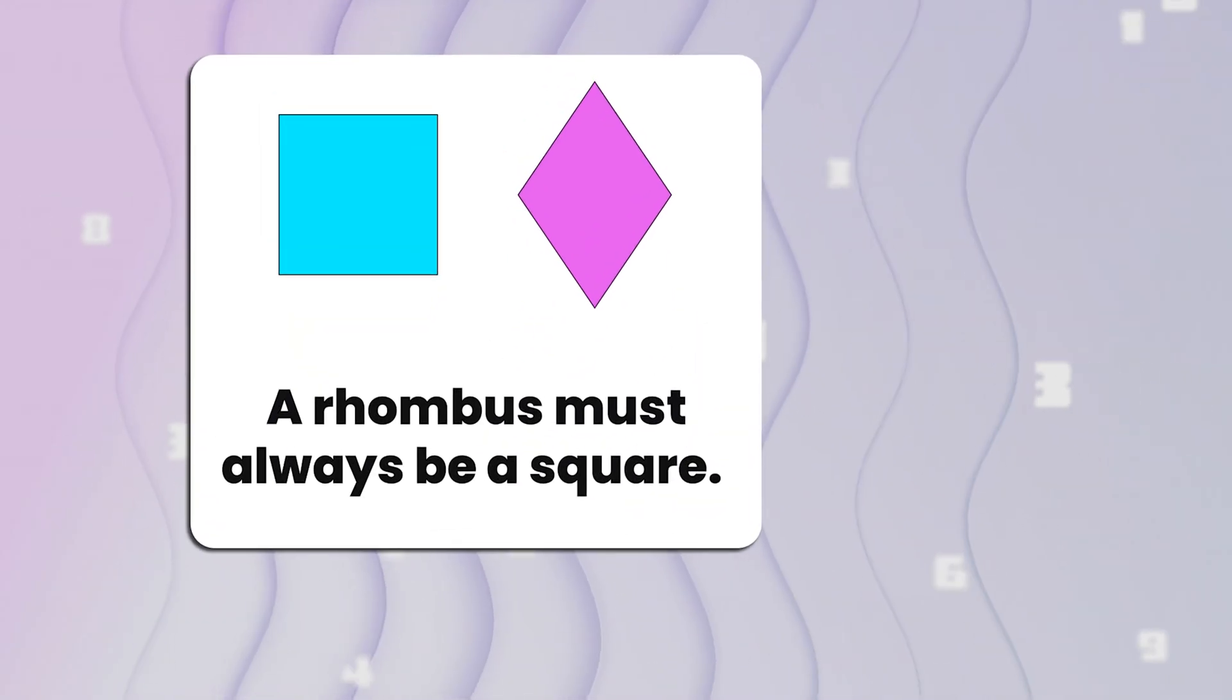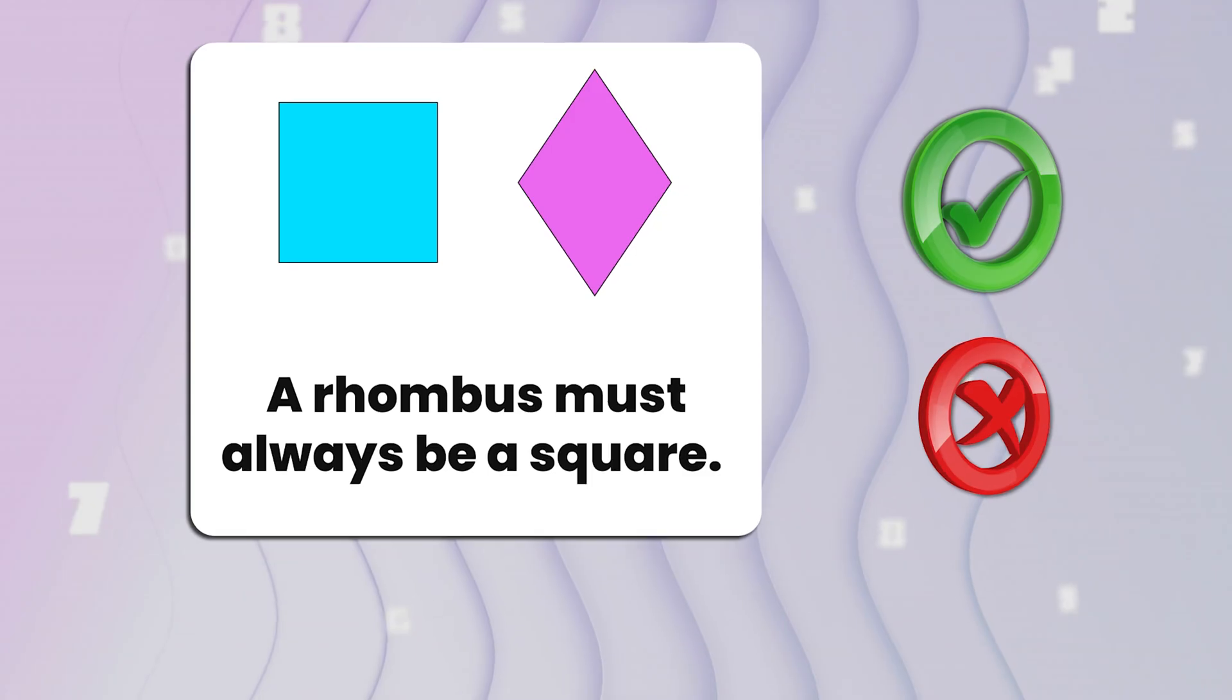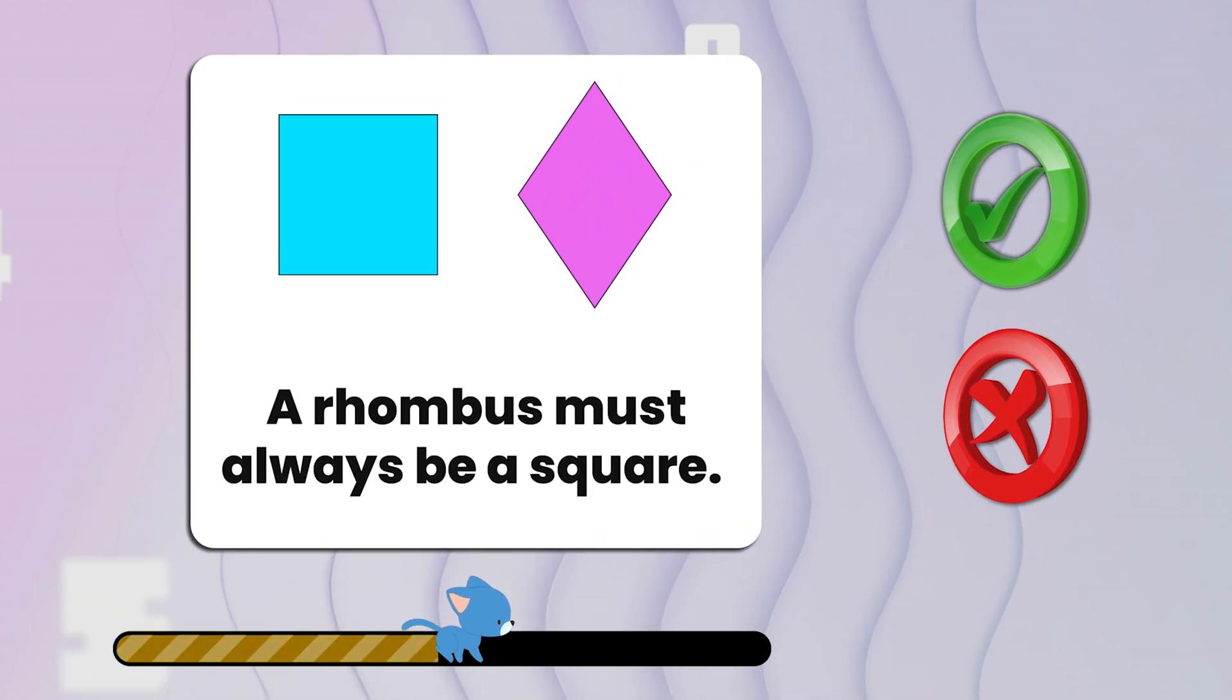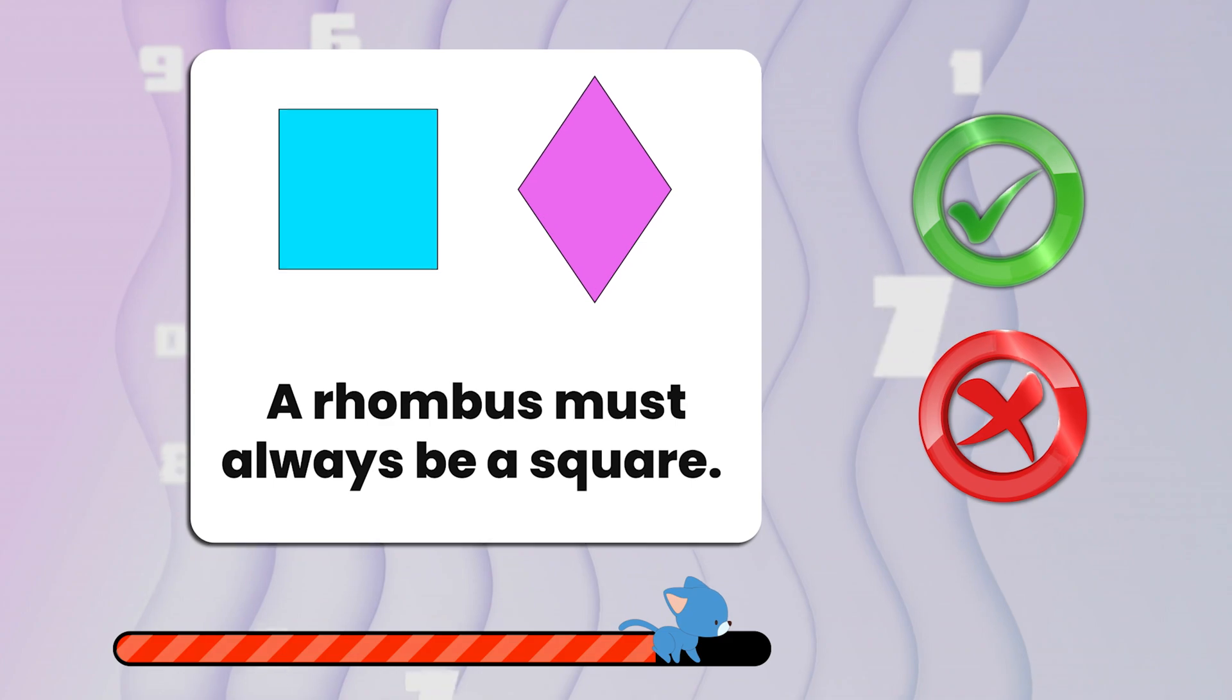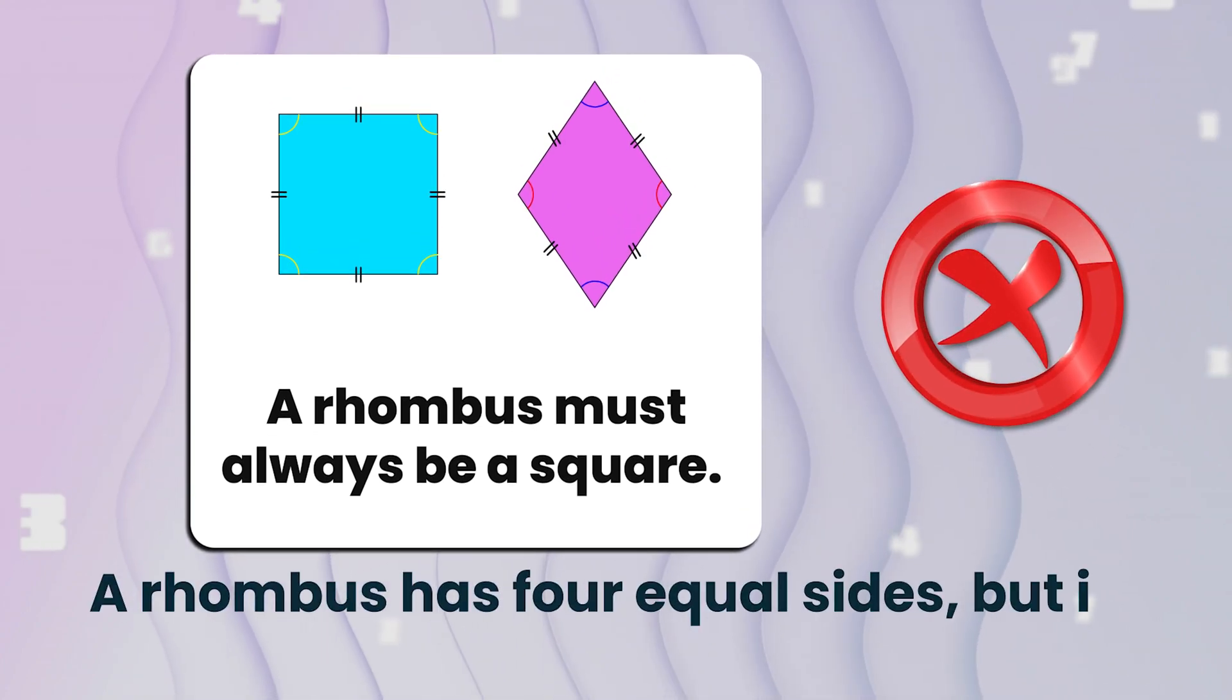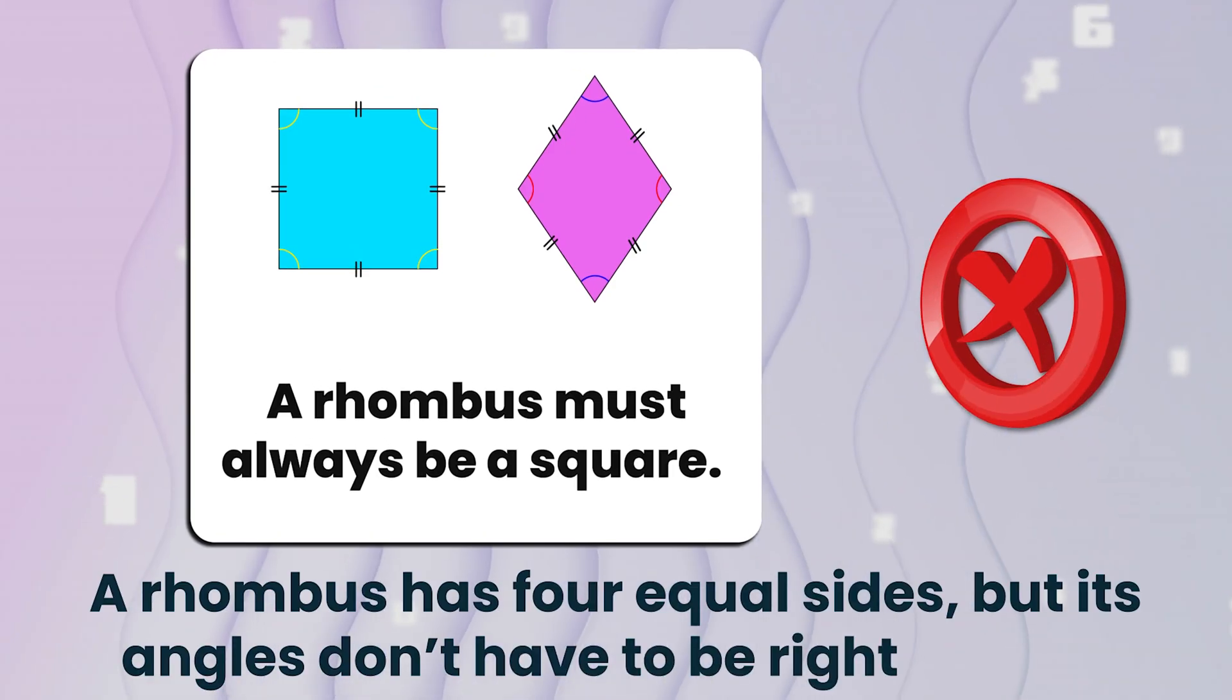Number five. A rhombus must always be a square. True or false? That's false. A rhombus has four equal sides, but its angles don't have to be right angles.